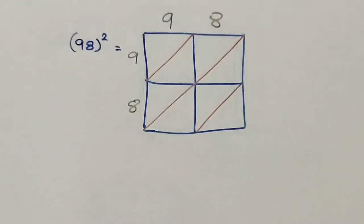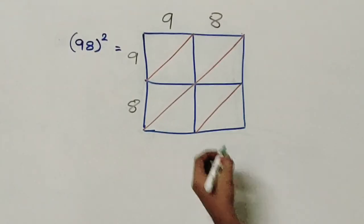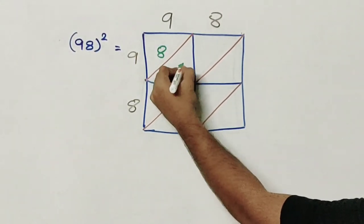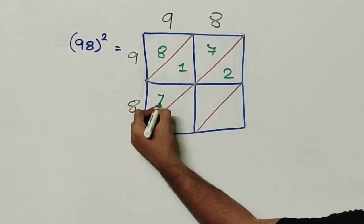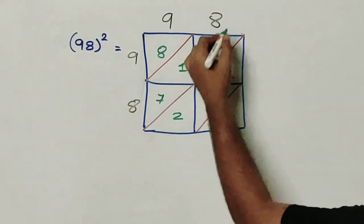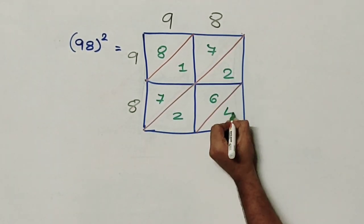So 9 times 9 gives me 81. 9 times 8 gives me 72. 8 times 9 gives me 72. And 8 times 8 gives me 64.